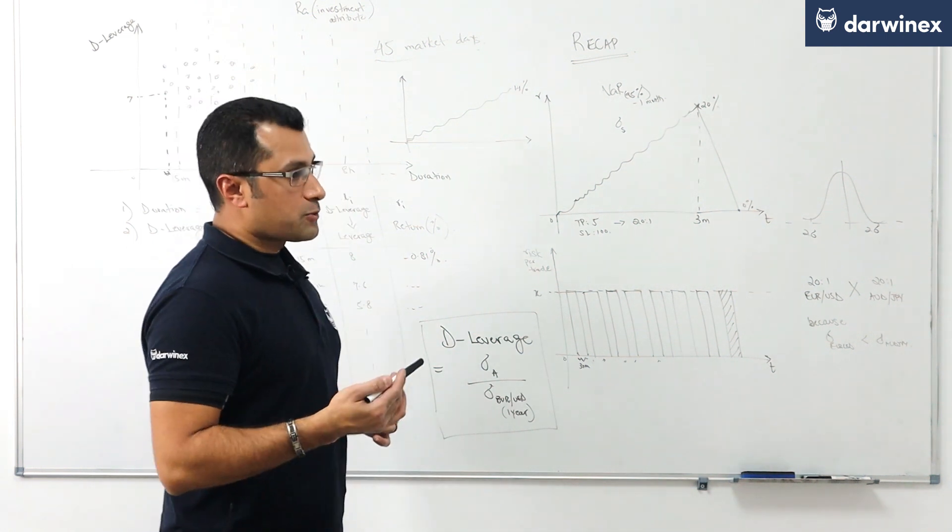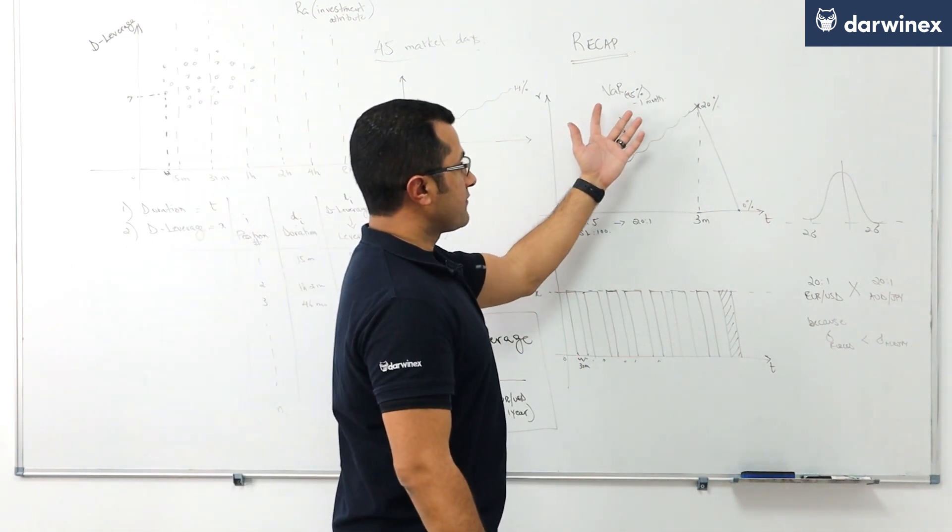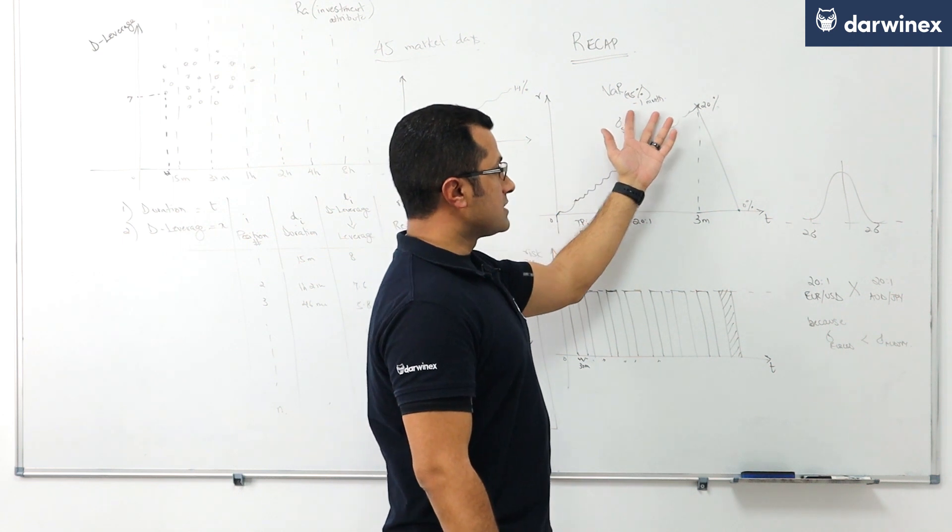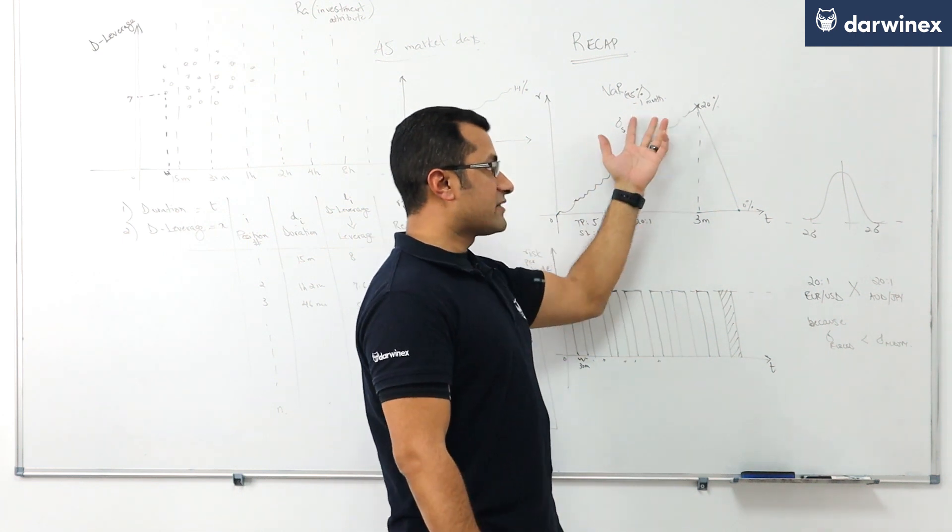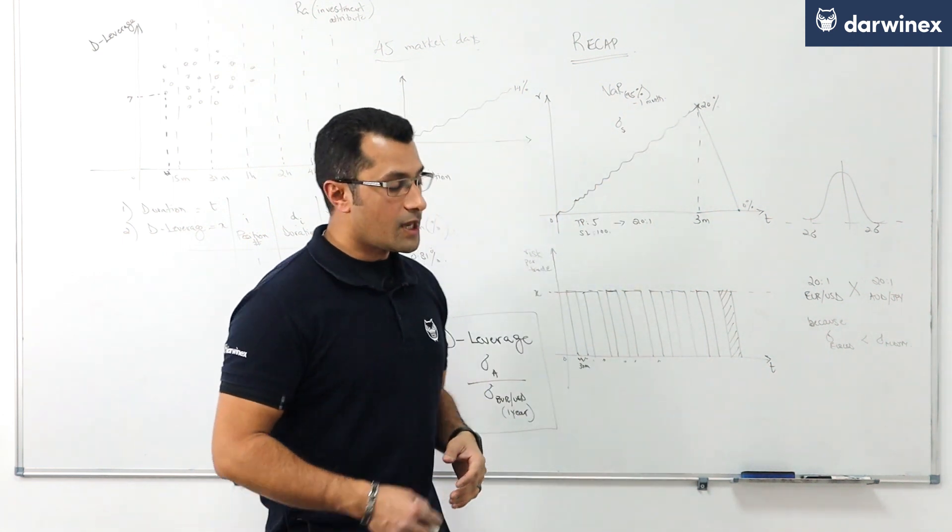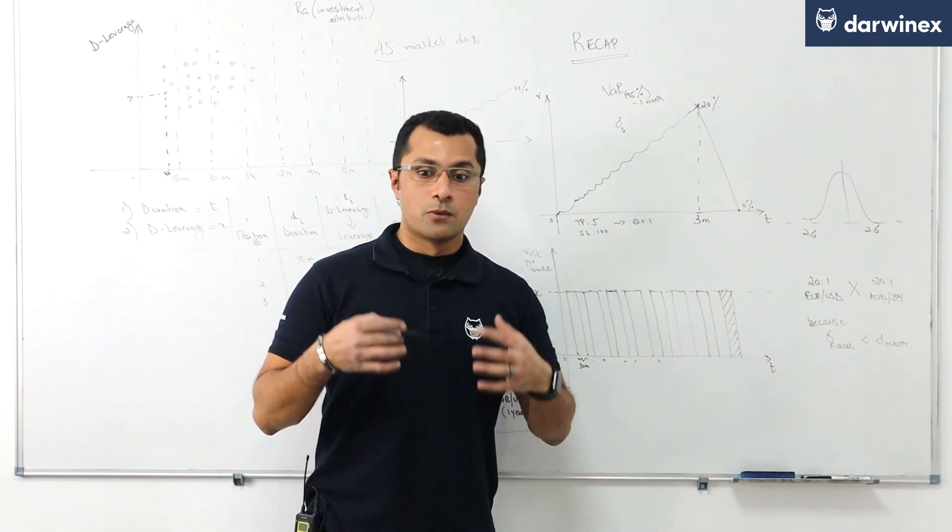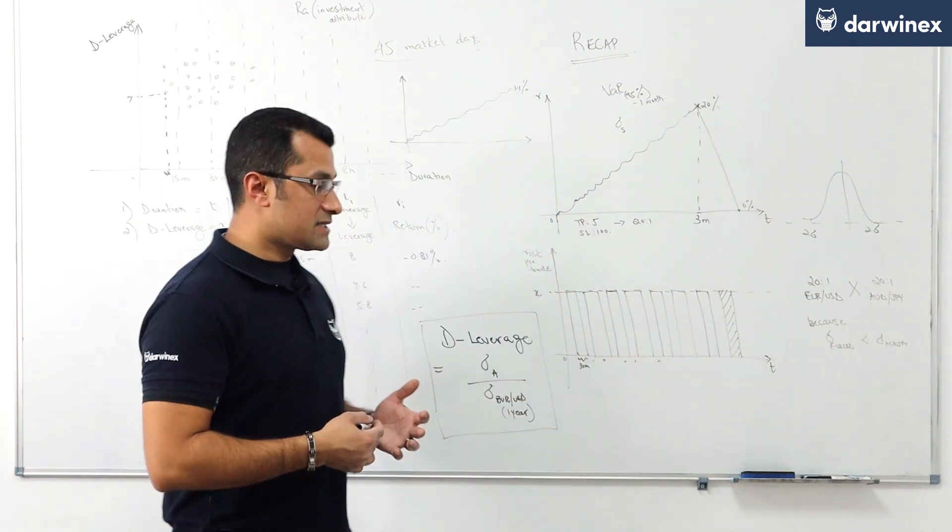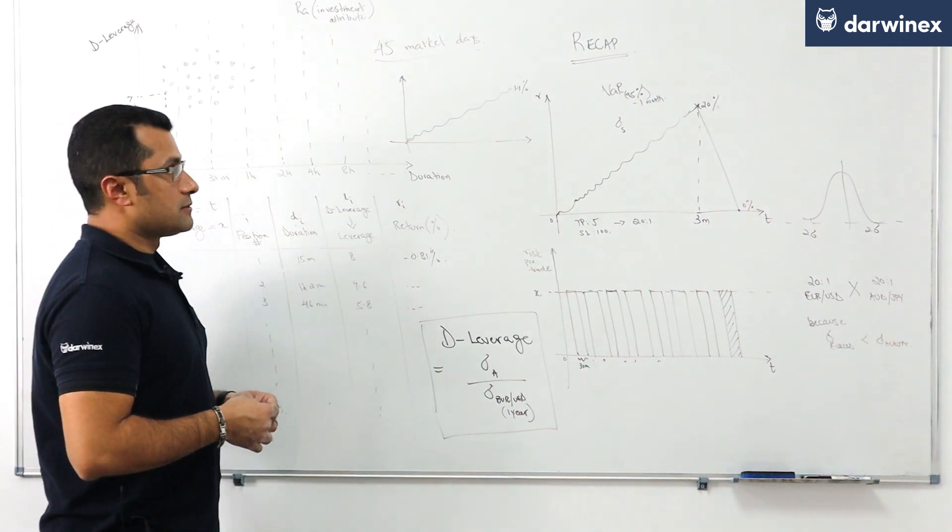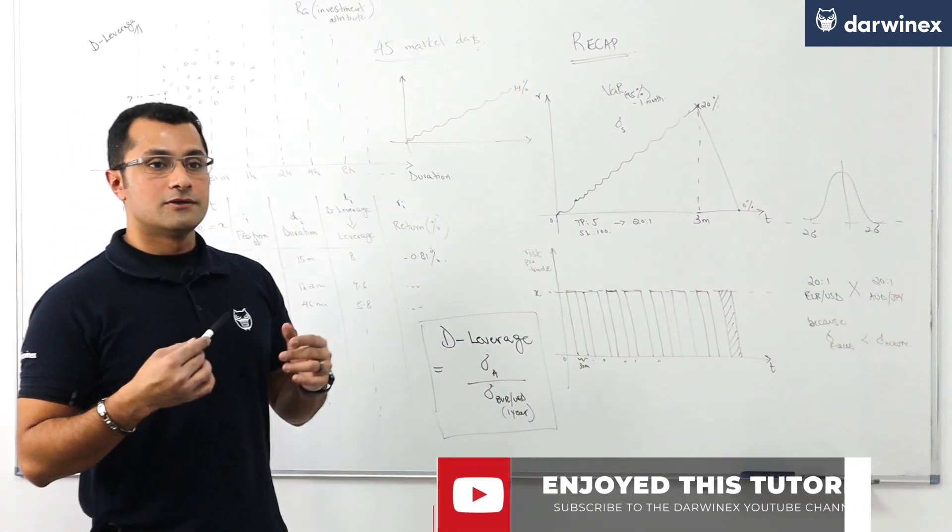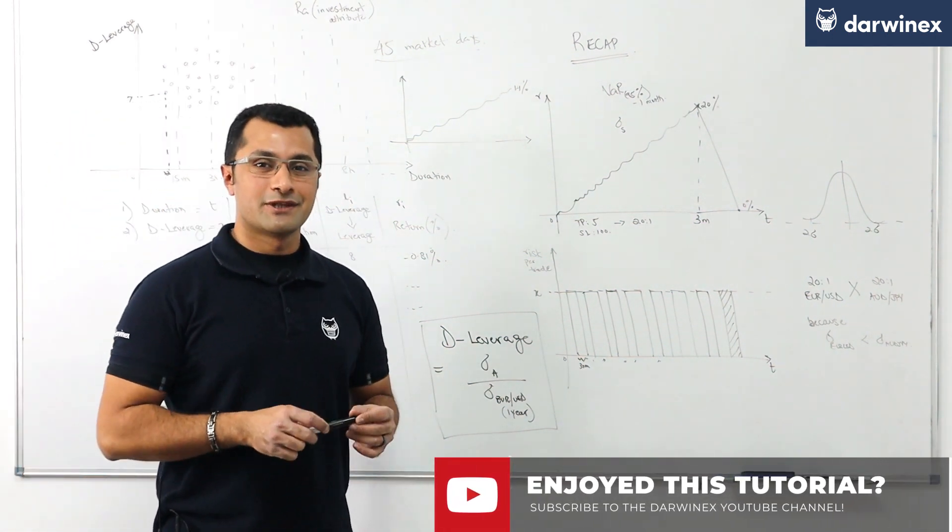and the issue that we have to work around is that we have to calculate value at risk at a confidence interval of 95 percent but over a fixed time horizon of one month so in the next part of this tutorial we'll go through the specifics of how we conduct these simulations bearing those two factors in mind and show you how that's done at DarwinX. See you in the next tutorial.